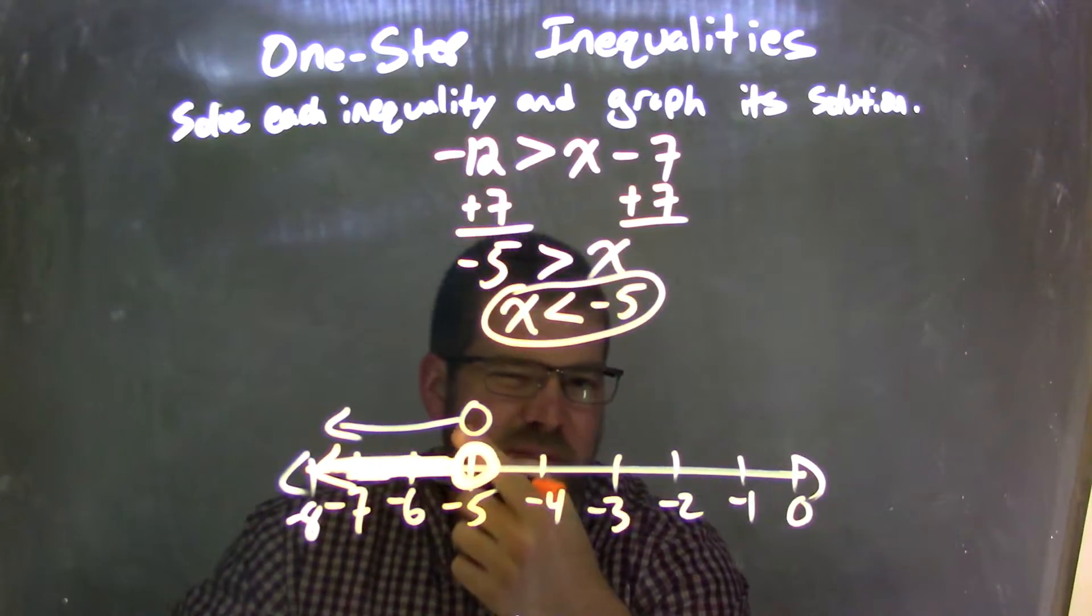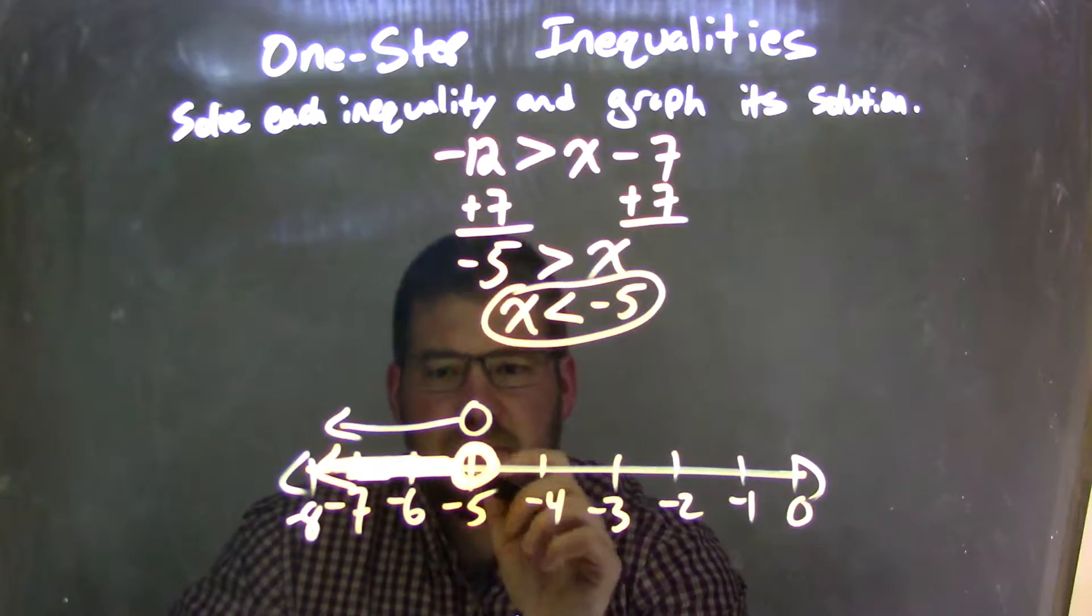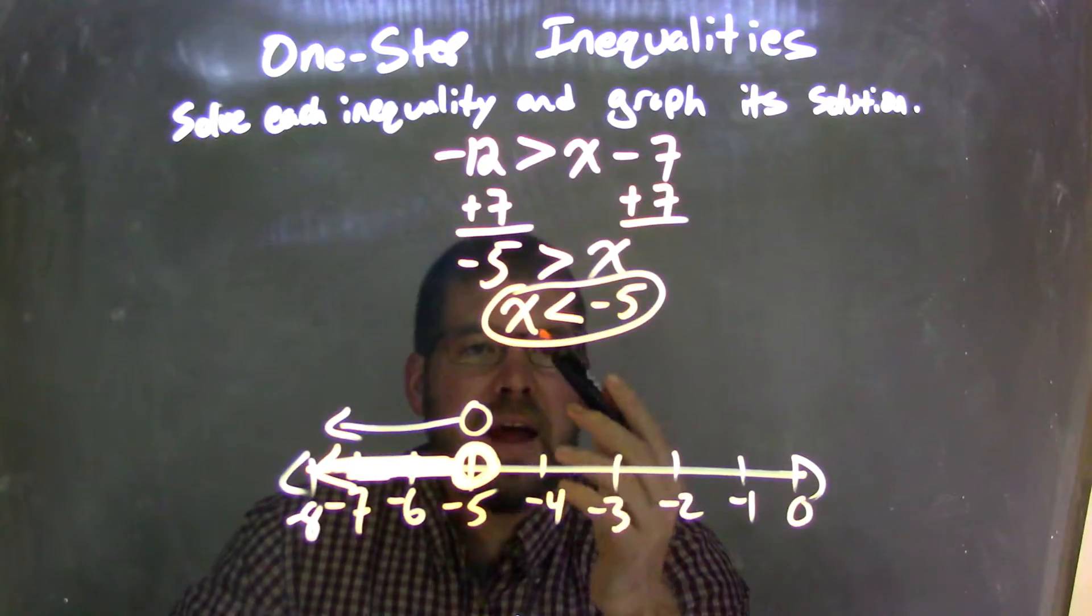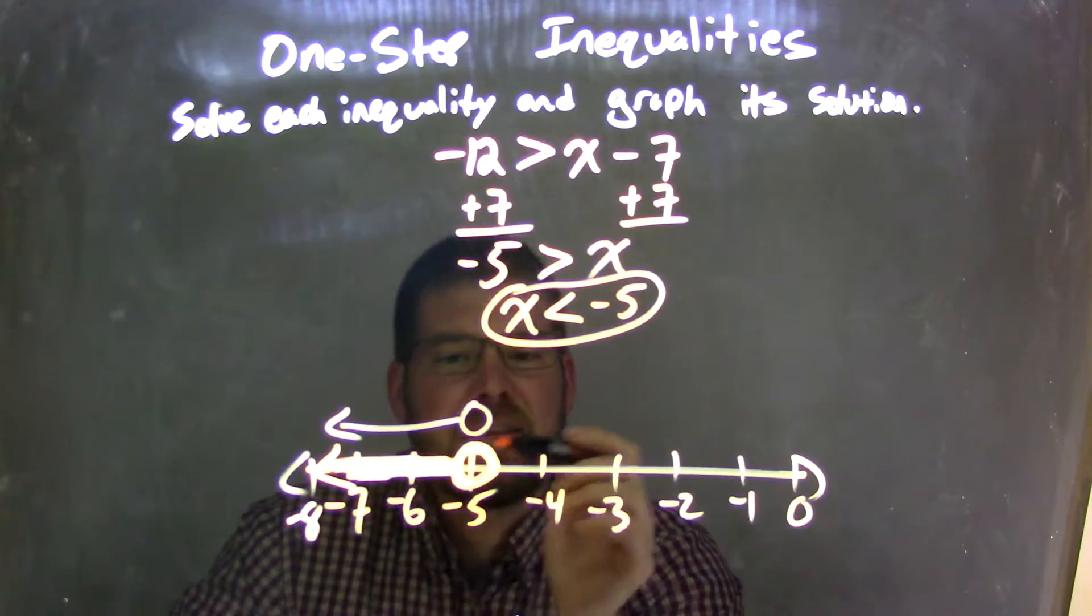But either way, there it is, it's one or the other, don't do both of them, okay? So that graph shows that x is less than all these values, it's less than negative 5.